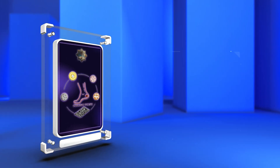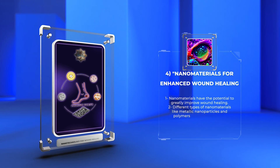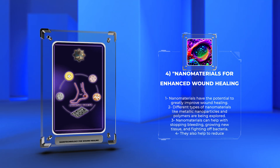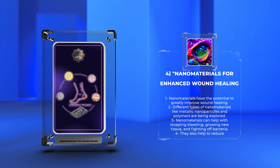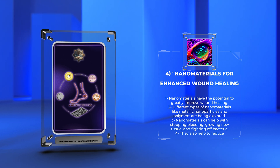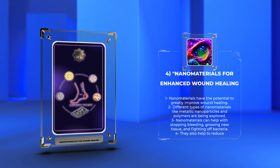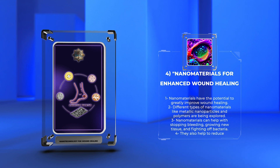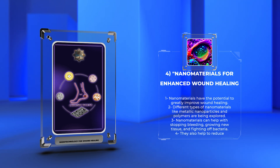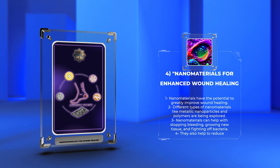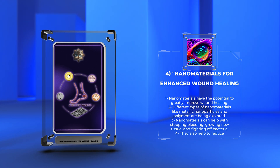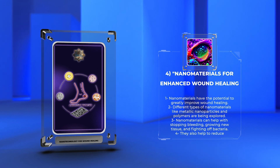Nanomaterials, which are tiny particles made up of various substances like metals and polymers, have the potential to greatly improve wound healing. These materials have special characteristics that can help with important stages of wound healing, such as stopping bleeding, growing new tissue, and fighting off bacteria. They can also help to reduce inflammation, which is an important part of the healing process. Researchers are exploring the use of different types of nanomaterials like metallic nanoparticles, metal oxides, polymers, hydrogels, and nanofibers to find the most effective options for enhancing wound healing.